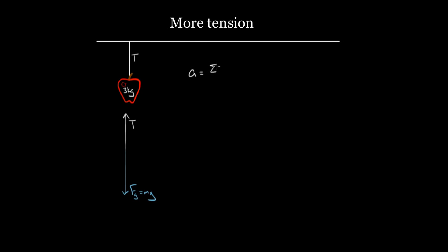We're going to use Newton's second law: the acceleration in a certain direction equals the net force in that direction divided by the mass. We'll pick the vertical direction because there are no forces in the horizontal direction. If this apple is just hanging here and not moving, it's not accelerating. We draw this force diagram for a reason — this is a strategy. These forces tell us what we plug into Newton's second law for the net force. If it's not on the diagram, I don't put it in; if it is, I have to include it.